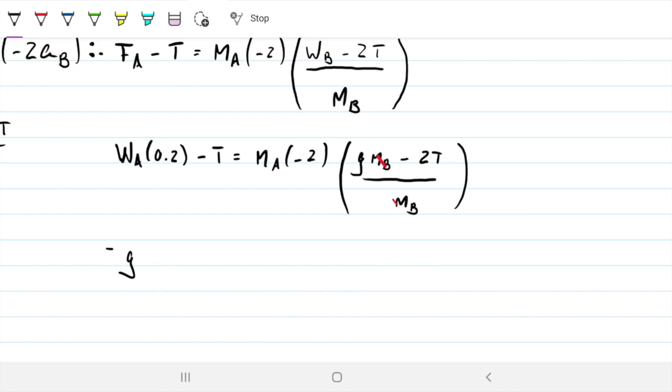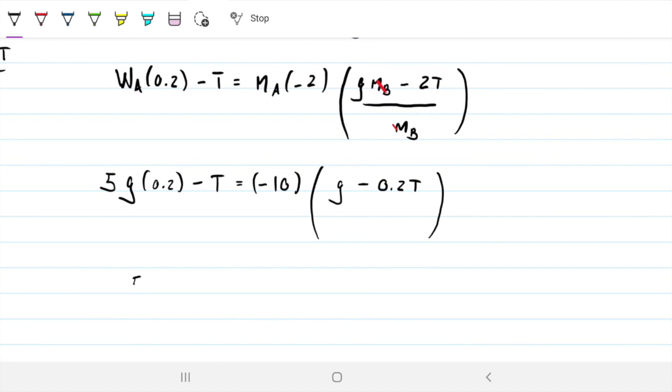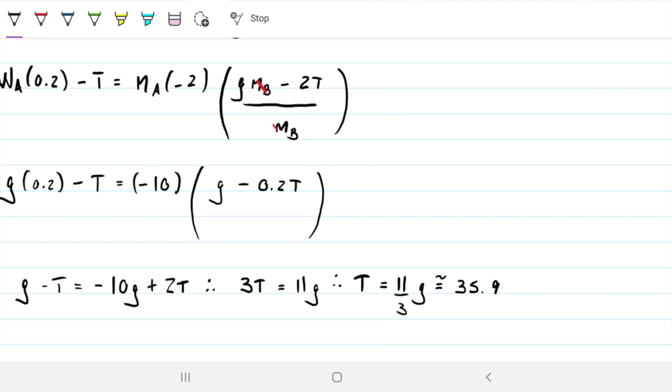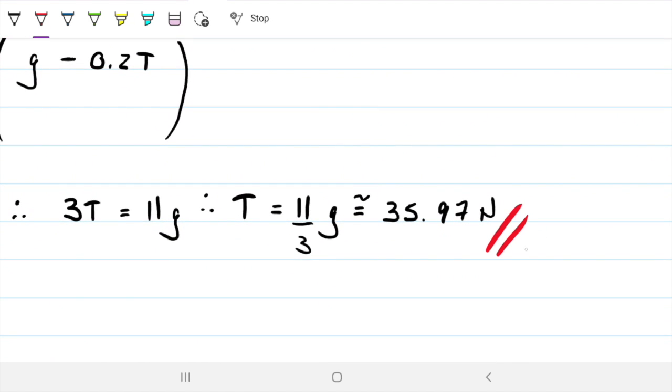So if we do that, we get the friction of A minus tension equals the mass of A times minus two that multiplies the weight of B minus two T divided by the mass of B. The only unknown here in this equation is the tension so we can solve for tension now. When I have friction, I'll substitute that by the weight of A times the coefficient 0.2, minus T, mass of A, minus two. Where I have weight of B, I'll go ahead and do gravity times the mass of B, two T, and that's all divided by the mass of B. So five times 0.2, that's just one, so this is gravity, minus T equals minus ten G, positive two T, therefore 3 T equals 11 G, and therefore T equals 11 thirds of gravity, which is about 35.97 newtons. This is our new value for tension after all these changes.